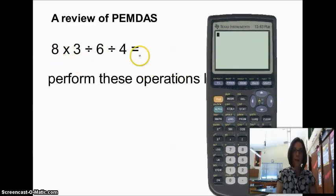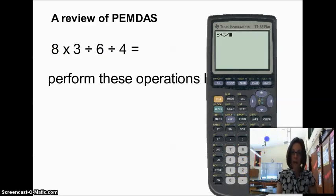And we're going to put these in left to right. So we would put in 8 times 3, divided by 6, divided by 4. And what the calculator is going to do is say 8 times 3, which is 24,